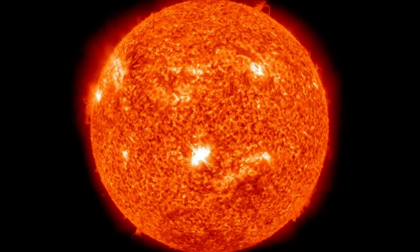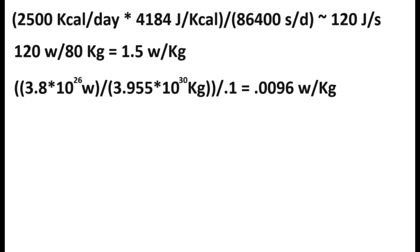Now, let's look at the sun. Its total power output is 3.8 times 10 to the 26 watts, and its mass is 3.955 times 10 to the 30 kilograms.